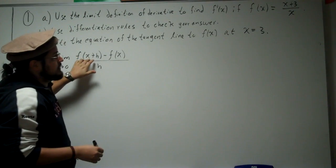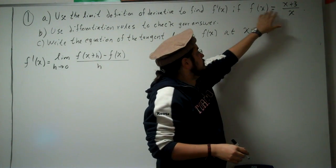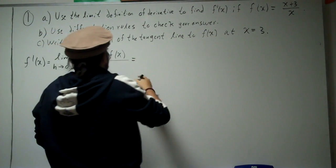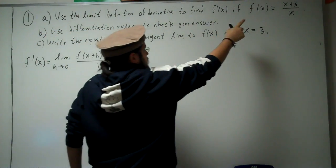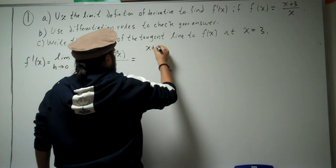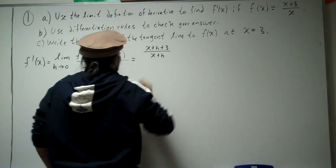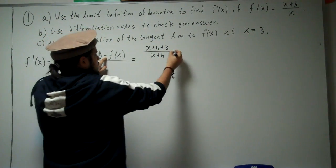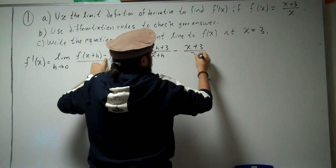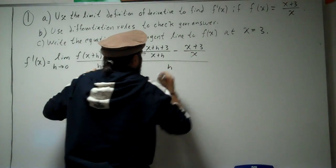To find f of x plus h, we plug in x plus h instead of x. So f of x plus h equals x plus h plus 3 divided by x plus h. Then we subtract f of x, which is x plus 3 divided by x, all divided by h.